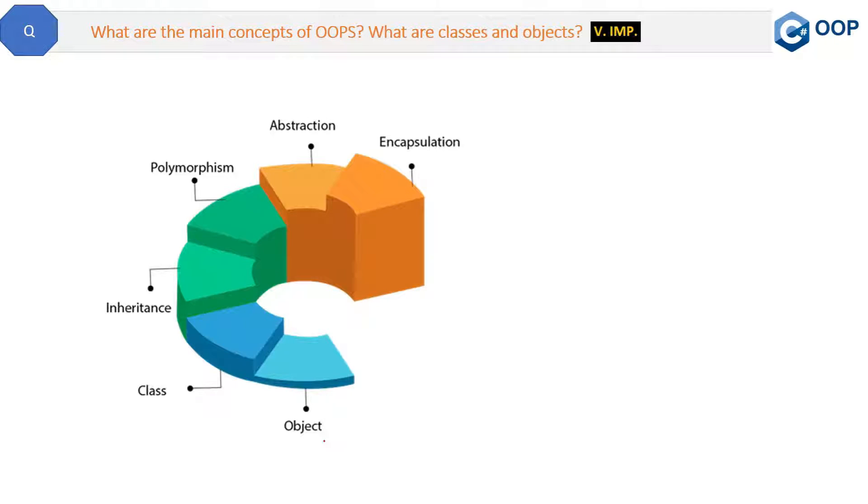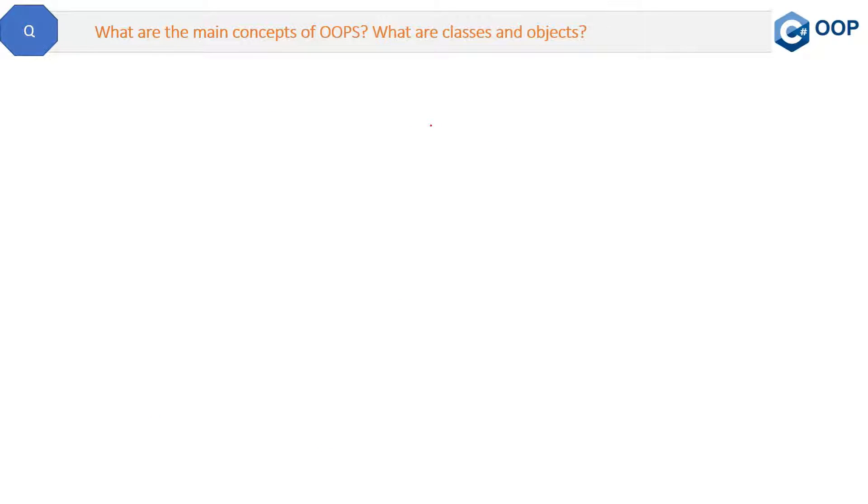Here are the main concepts of OOPs: objects, classes, inheritance, polymorphism, abstraction, and encapsulation. Whenever an interviewer asks about the four pillars of OOPs, they are inheritance, polymorphism, abstraction, and encapsulation only. In this question we will only focus on classes and objects, and then other concepts we will cover in upcoming questions.